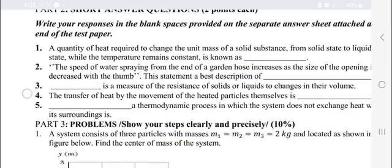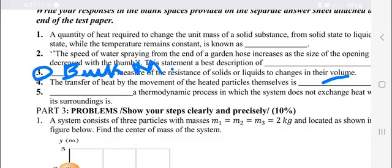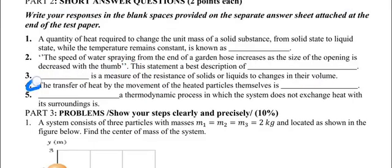The third question: blank is a measure of the resistance of solids or liquids to changes in their volume. The answer is bulk modulus. The unit of bulk modulus is given naturally. That is question number three.